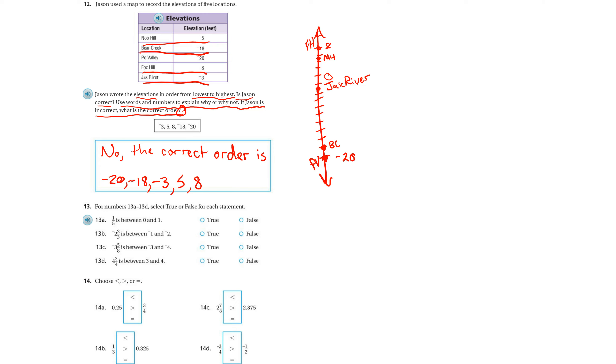Number 13. True or false. One-fifth is between zero and one. I would create a number line. Looks like we have to go as far back as negative four and as far to the right as positive four. One-fifth is between zero and one. One-fifth is more than zero but less than one, so it's going to be right about there. So that's true.